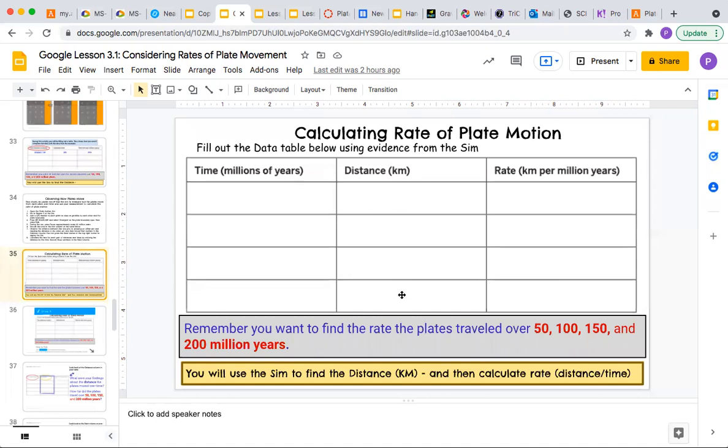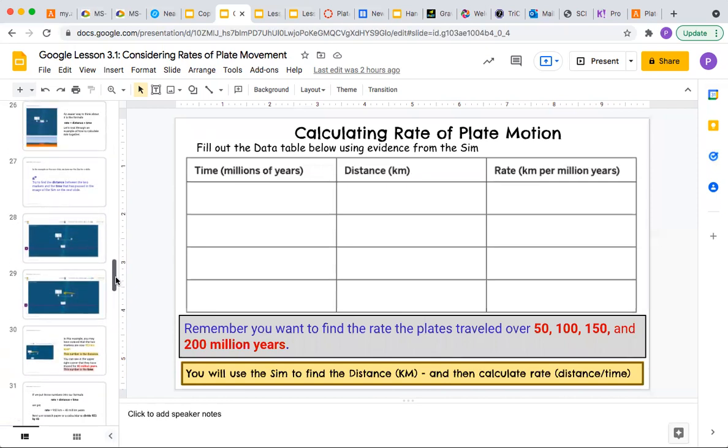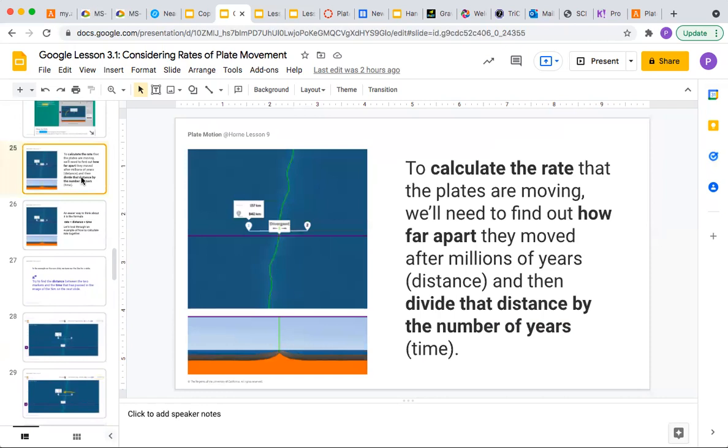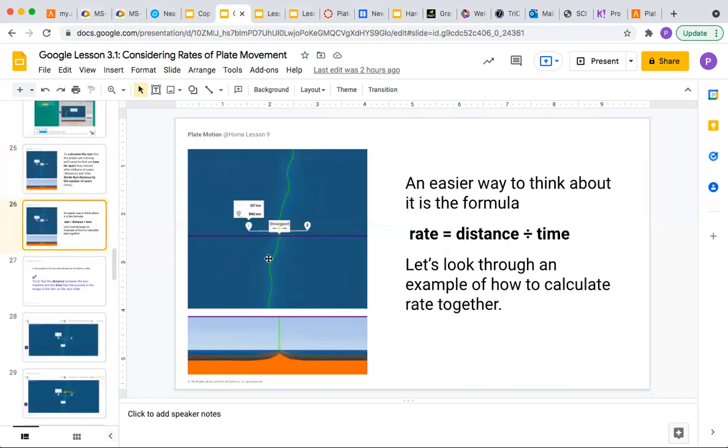In calculating, this is where you're going to calculate the rate. Here's the example that the slides are giving you. To calculate the rate that the plates are moving, you first need to find out how far apart they moved after millions of years, which is the distance. And you're going to divide that distance by the number of years. The formula is rate equals distance divided by time.